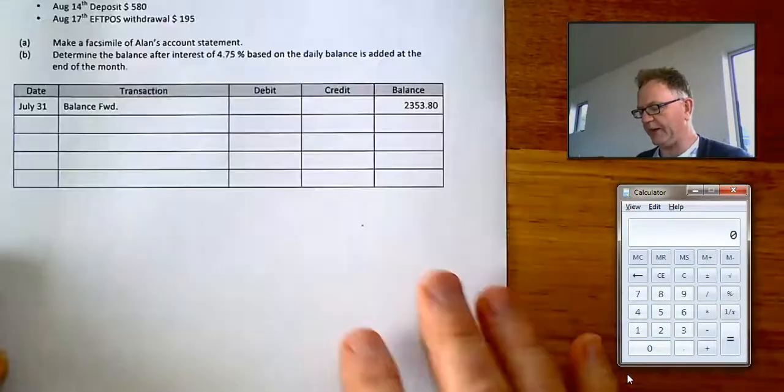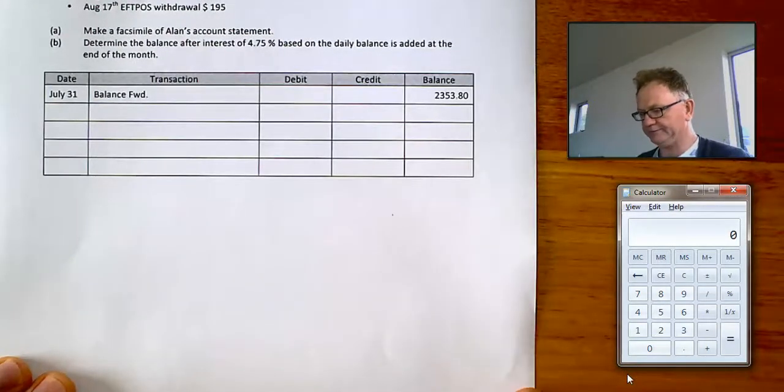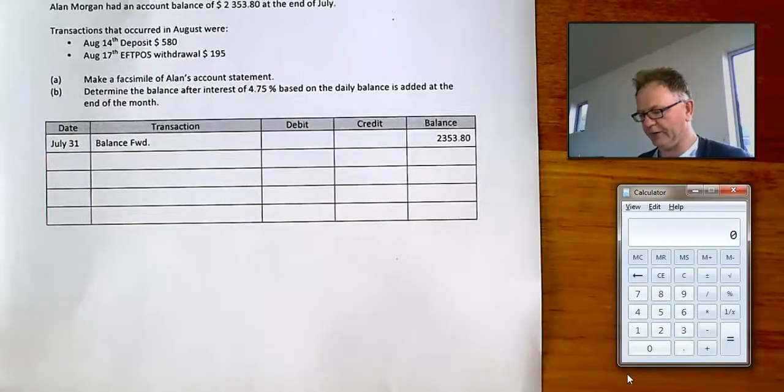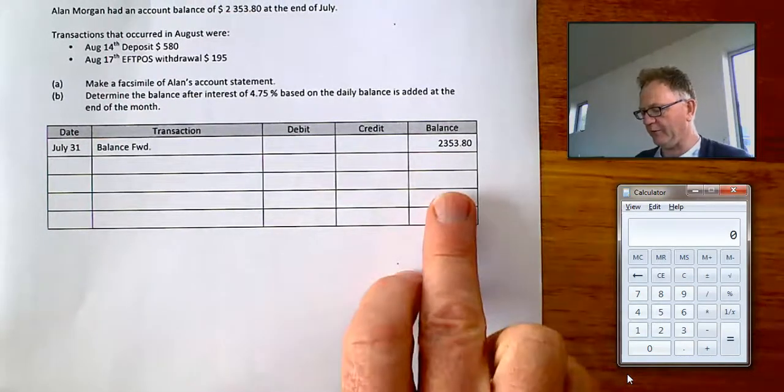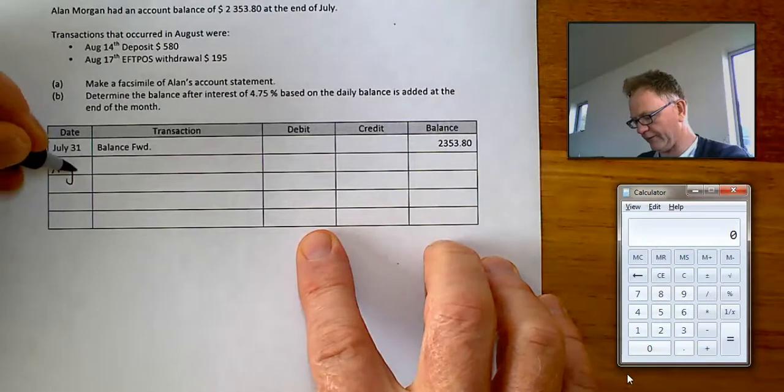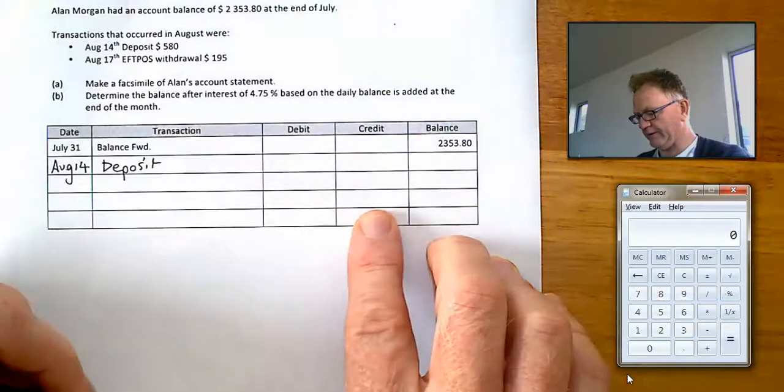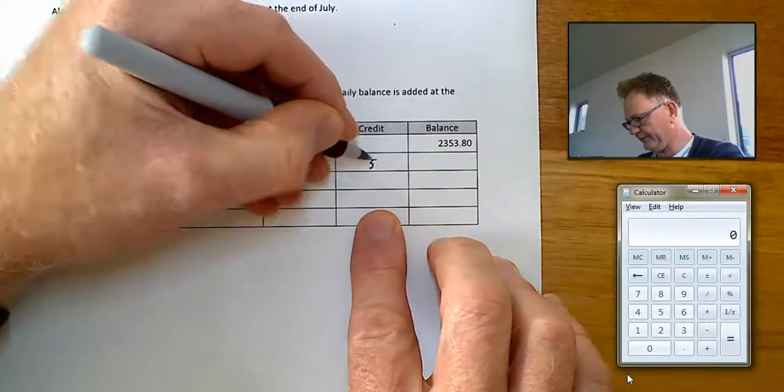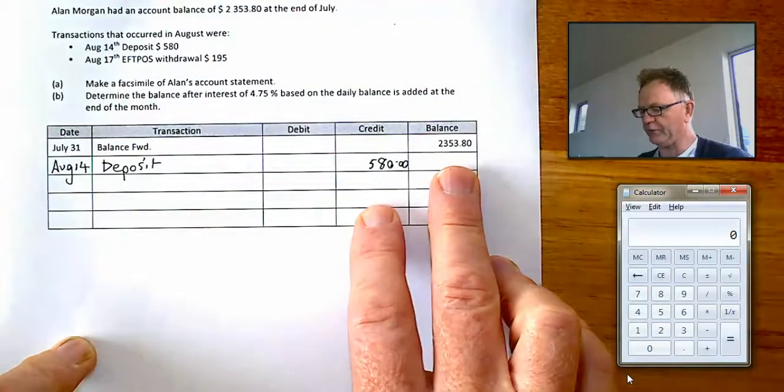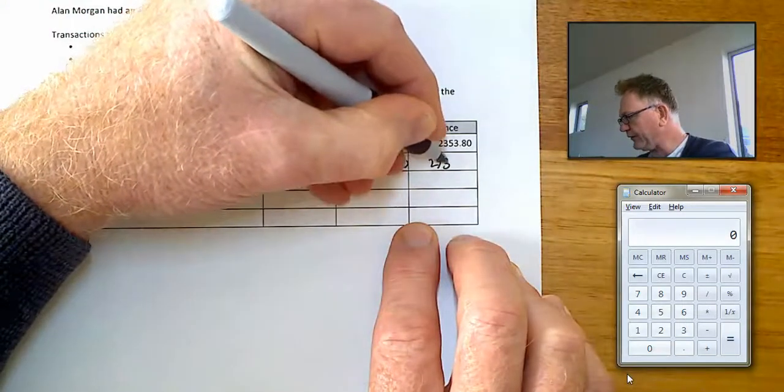And it asks you to actually prepare the bank statement. There we go there. Okay. Looking a bit better. Now it says he starts the month with this balance. That's brought forward from July. On August the 14th. There was a transaction. He deposited some money. The deposit was $580. Now if that was his form of balance. He puts in $580. He'll have $2,933.80.